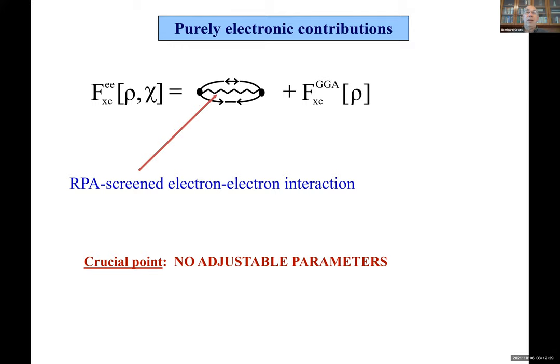For the electronic part of the functional, we use the anomalous diagrams with an RPA-screened electron-electron interaction. Since these involve anomalous propagators, this term vanishes above the critical temperature, leaving just an ordinary GGA-type density functional. That is our functional — no choices, no adjustable parameters. Once you write down this approximation, you just see what comes out.